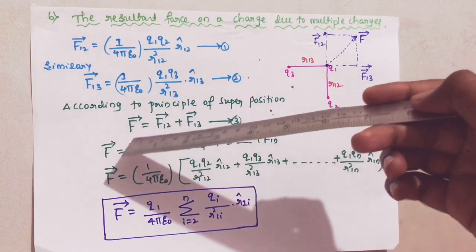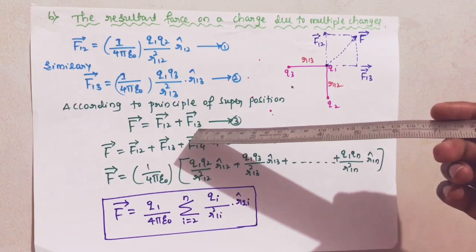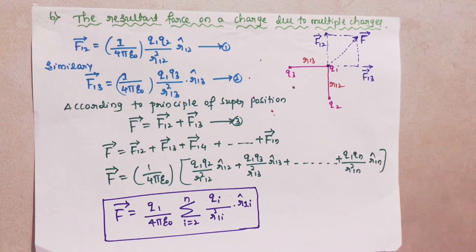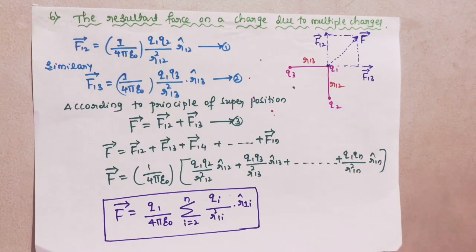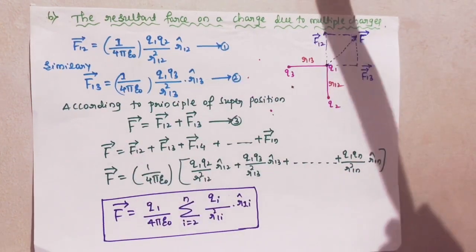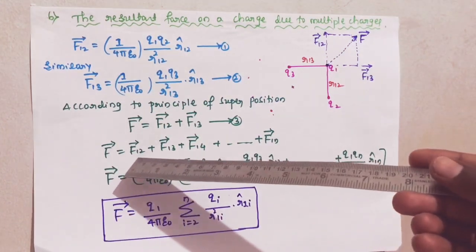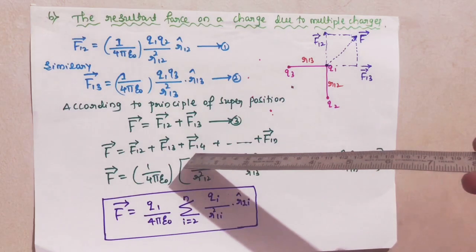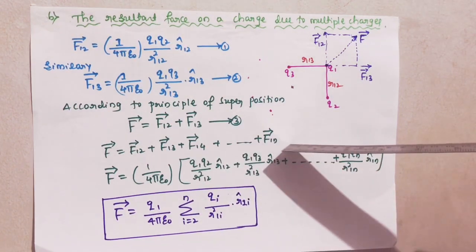According to the principle of superposition you get: vector F equals f12 plus f13. But suppose the system contains n number of charge particles — q1, q2, q3, and so on up to qn — then the forces on charge q1 due to the other charges are vector f12, vector f13, vector f14, and so on up to vector f1n. Then the vector F equals vector f12 plus vector f13 plus vector f14 and so on up to n terms.